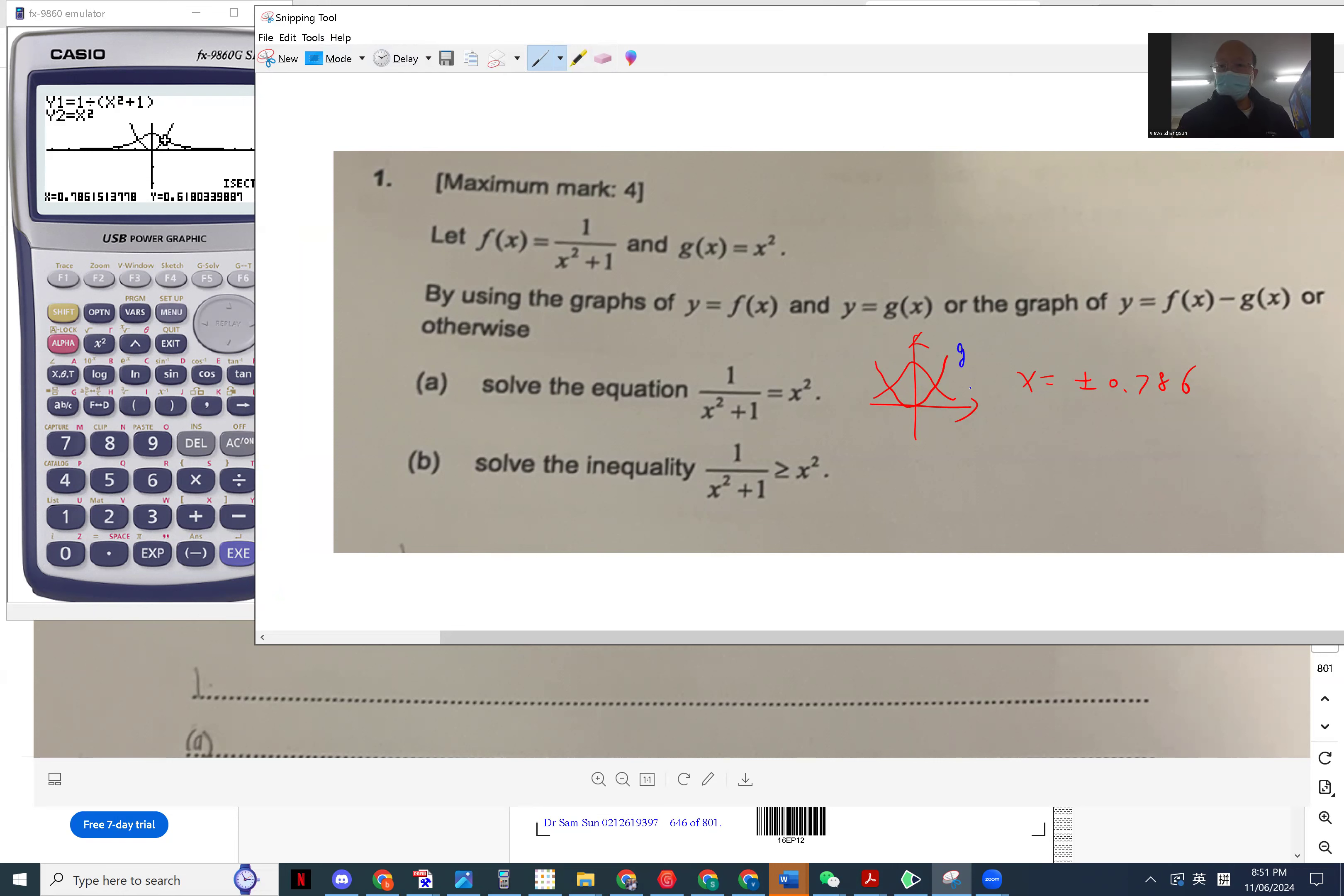This is g, this is f(x). We need f(x) larger, so this piece. For x between the intersection points, that's how we solve the question.